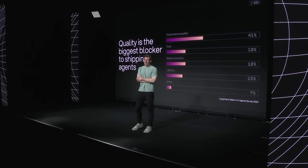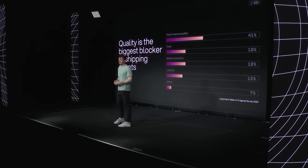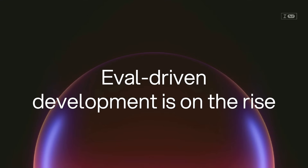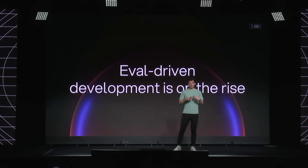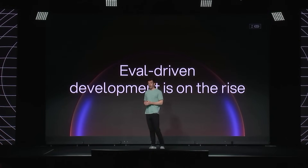We ran a survey of agent builders about six months ago where we asked them what was the biggest blocker for getting more agents into production. The number one thing that they cited by far was quality. We talked a little bit with Michele about the tradeoffs between quality and latency and cost, and quality is still the top thing blocking people from getting to production. In order to bridge that gap from prototype to production and increase that quality, one of the techniques that we've seen people adopt is eval-driven development — using evals throughout a bunch of different stages of development to measure your app's performance.